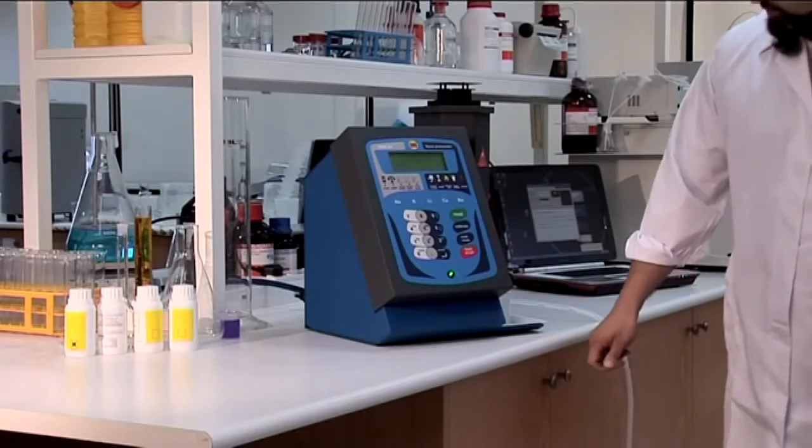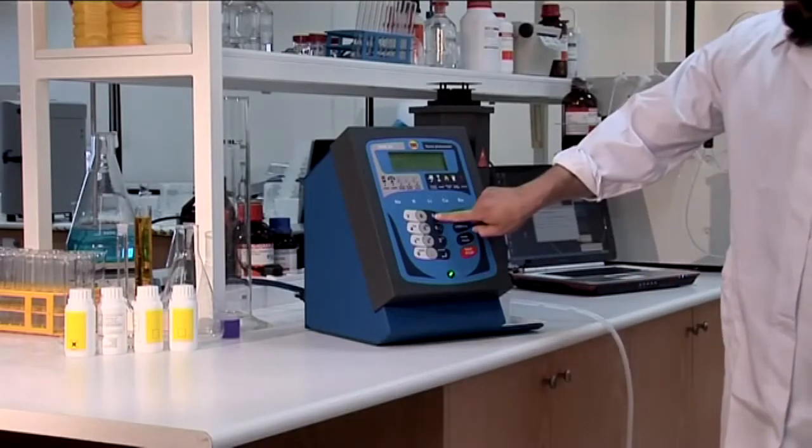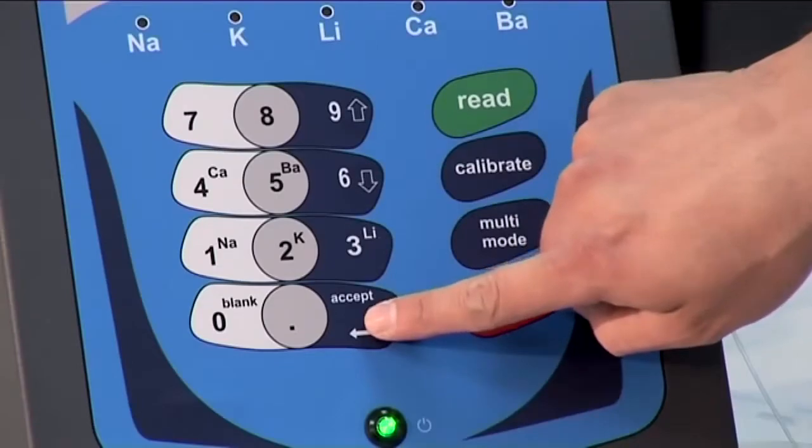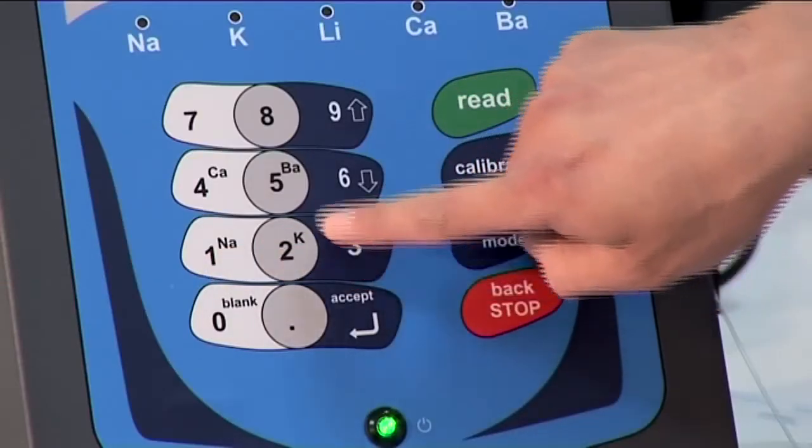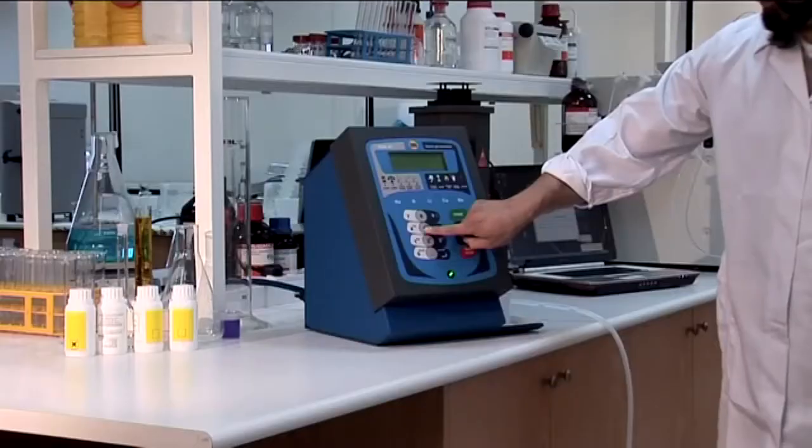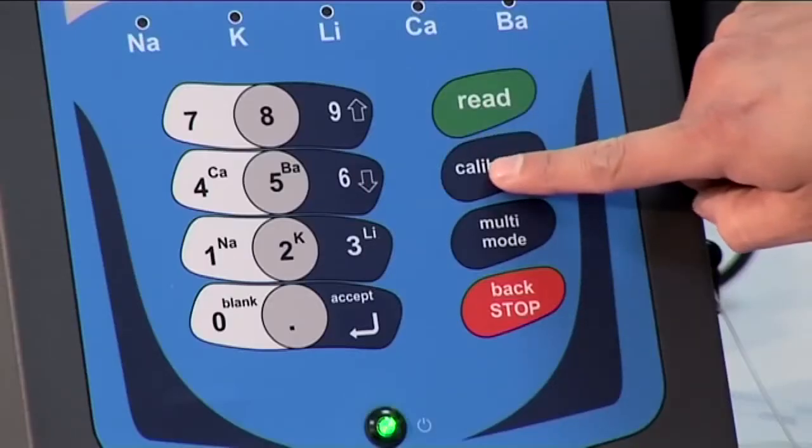There are three ways to navigate through the menu structure. Firstly, the up and down arrows and pressing accept, pressing the number ion buttons, and finally the three shortcut buttons: read, calibrate, and multi-mode.